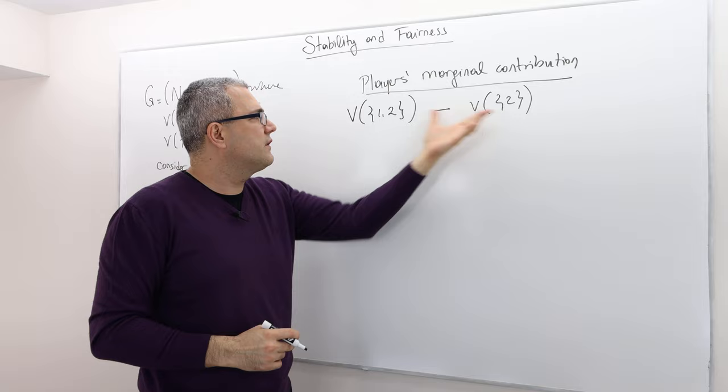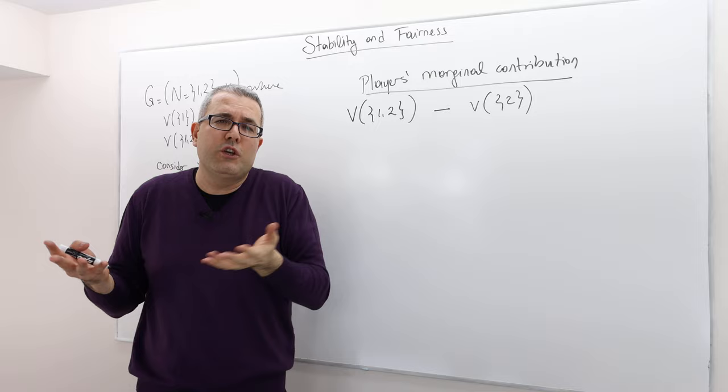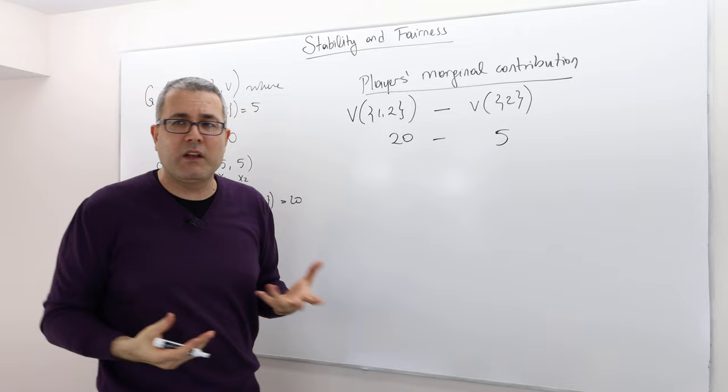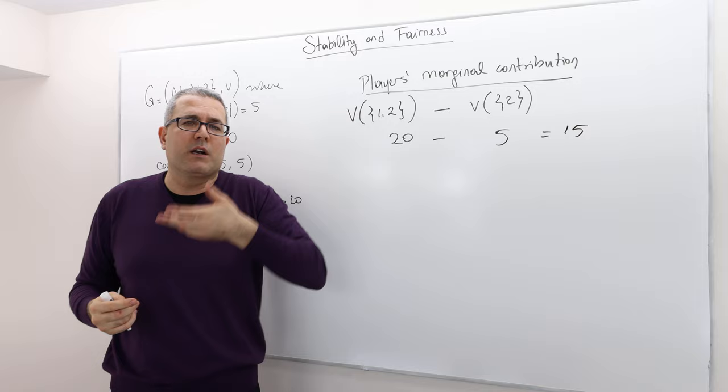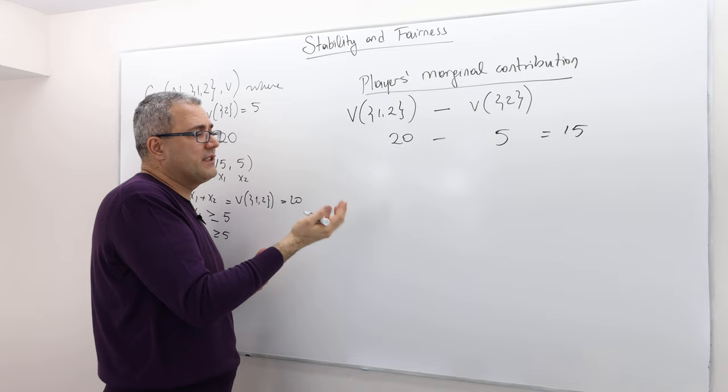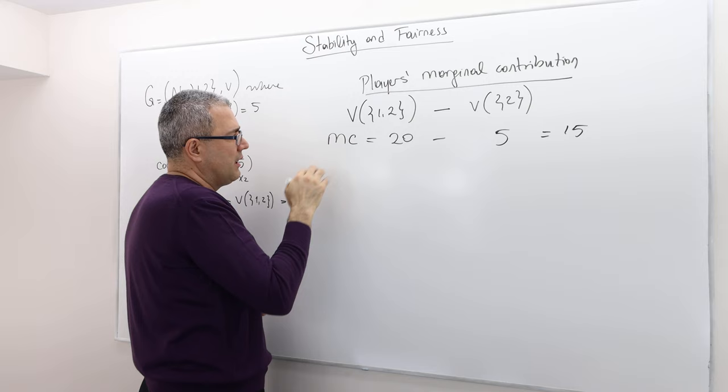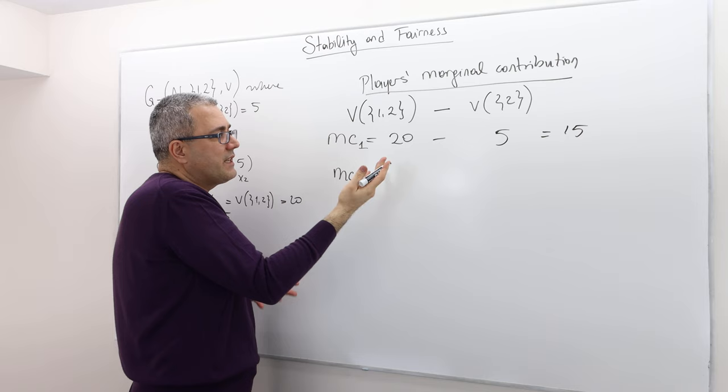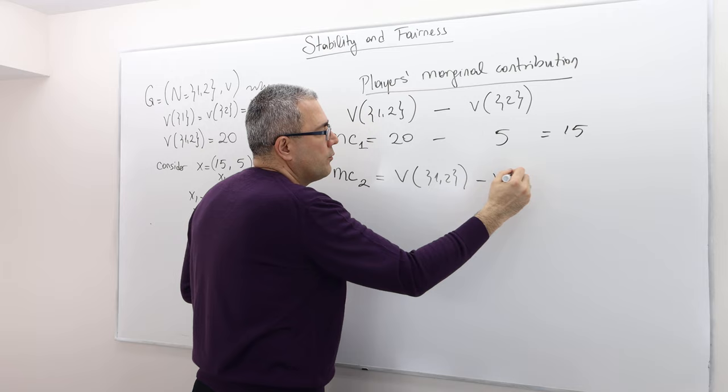Well, this difference is kind of like, I mean, initially, when player 2 was alone, his worth was 5 units. And now, once I enter to his coalition, the worth becomes 20. So this 15 units of difference, kind of my marginal contribution. Agree? Well, but you can do exactly the same thing for player 2, right? So let's call this marginal contribution of player 1. Well, what about the marginal contribution of player 2? It's the same, right? It's V12 minus V1. Well, the numbers are the same. It's 20 minus 5, so it's 15.